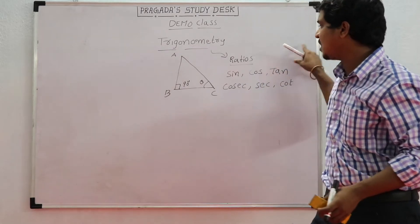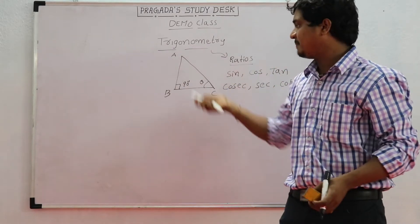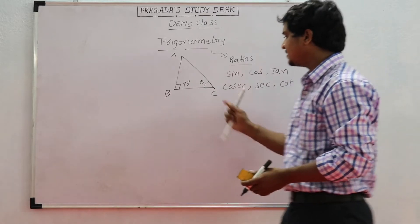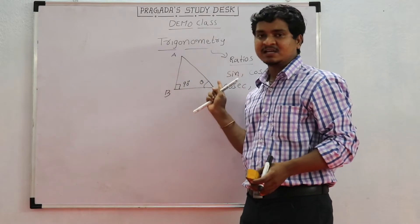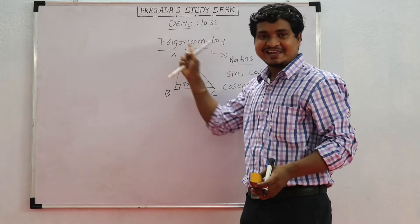Basically, we find these ratios by using a right angle triangle. For the right angle triangle, A, B, C are the vertices, AB, BC, CA are the sides, and Angle A, Angle B, Angle C are the angles.